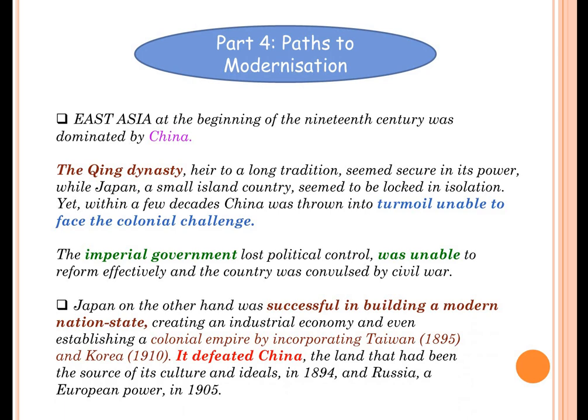Japan, on the other hand, was very successful. It was very successful in building a modern nation state — that's why I call it the path to modernization. It created a successful industrial economy. It even established a colonial empire which incorporated Taiwan and Korea.